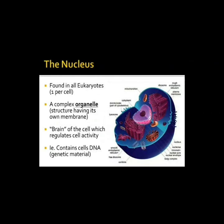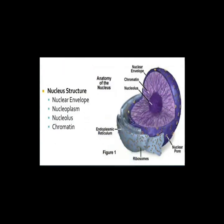Next, the nucleus — one of the most important phenomena in cell biology. Found in all eukaryotic cells, one per cell. It is a complex organelle with its own membrane, also known as the brain of the cell, which regulates cell activities. It contains the cell's DNA. Nucleus structures include: the nuclear envelope, nucleoplasm, nucleolus, and chromatins, as you can see in the pictures.